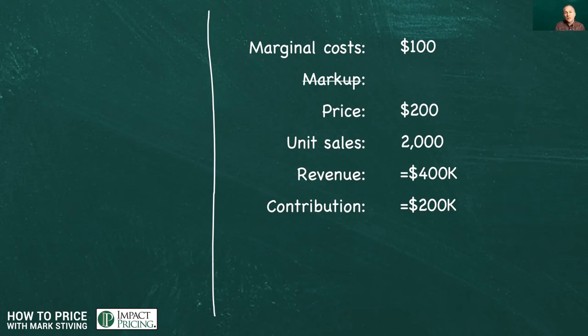What if instead we did something that looked like this? We said, hey, we've still got those marginal costs of $100. We're still going to charge $200, but we got to that $200 by using value-based pricing. This is what our market is willing to pay. It turns out we sell 2,000 units at $200. Our revenue is $400,000. Our contribution is still $200,000.